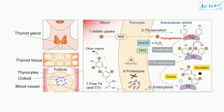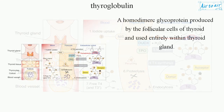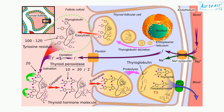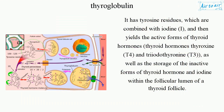Thyroglobulin: a homodimeric glycoprotein produced by the follicular cells of the thyroid and used entirely within the thyroid gland. It has tyrosine residues which are combined with iodine, and then yields the active forms of thyroid hormones — thyroxine (T4) and triiodothyronine (T3).